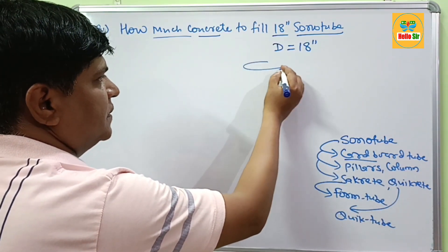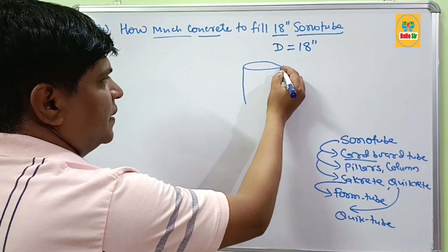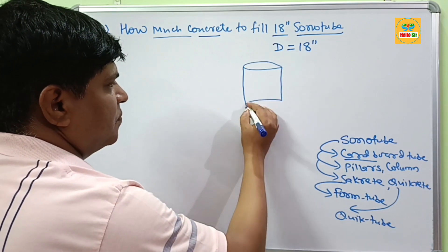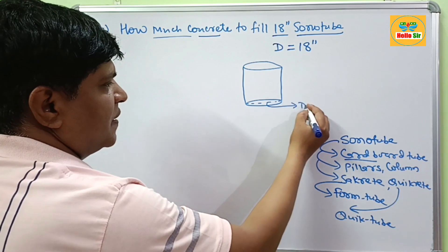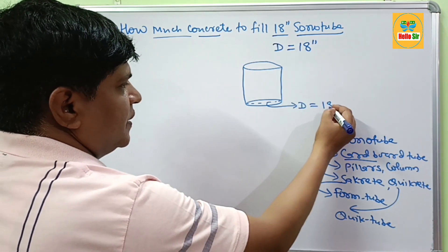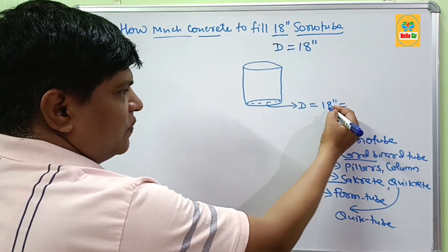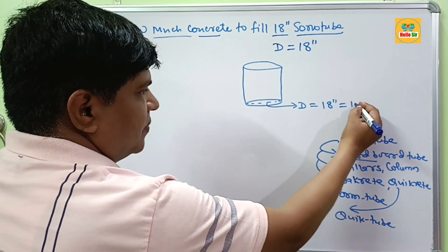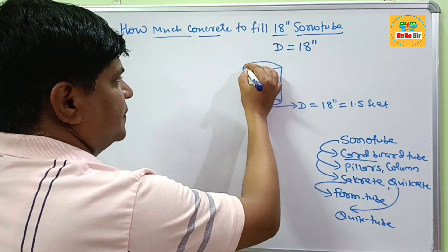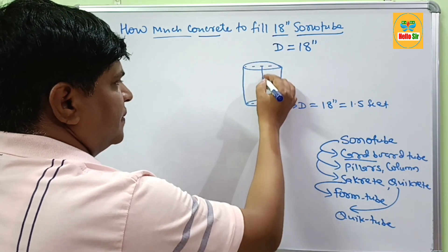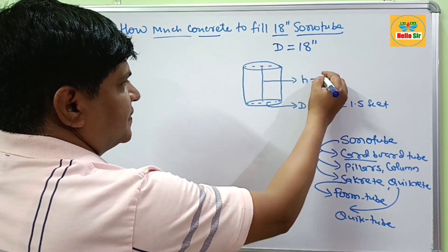Suppose this is your 18 inch diameter of sonotubes. When we convert this figure in feet, this will be 1.5 feet. This is the diameter and this one is their height, h.